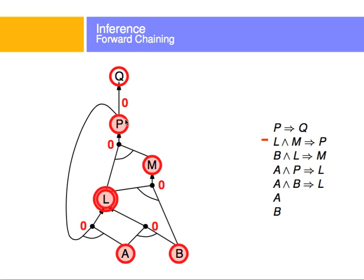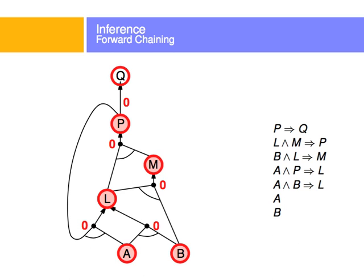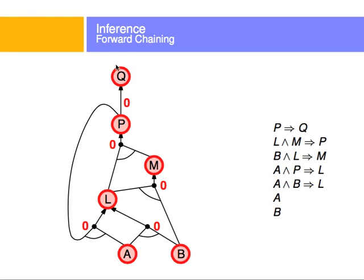I evaluate M, which is in the L and M implies P clause. I reduce that clause's count to zero, which means P is going to be true — so P is what I explore next. P is in the clause with L, making that count zero as well. I know L is true already — the double circle represents looping through that variable again. With all counts at zero, I add Q to the statements to evaluate and assume it true, because all implications leading to Q are proved. That is how forward chaining works.